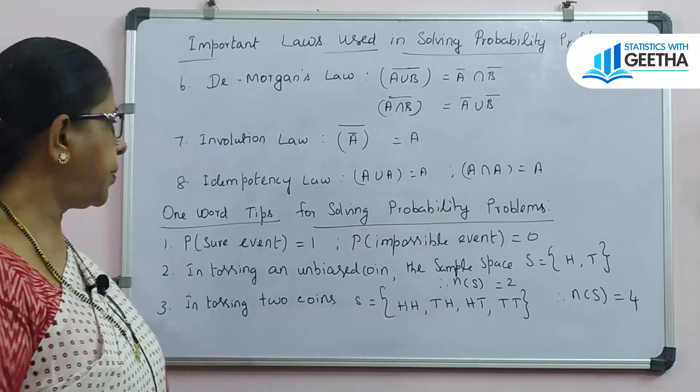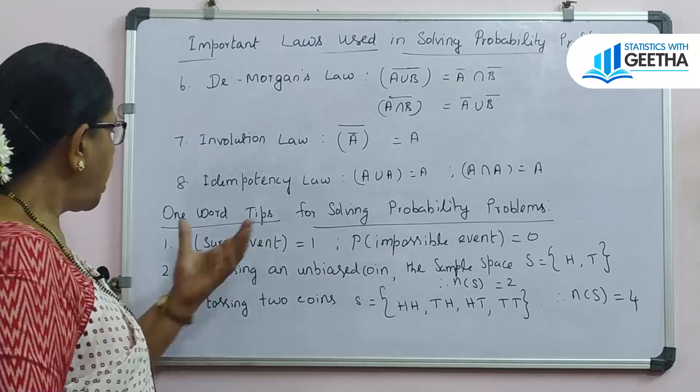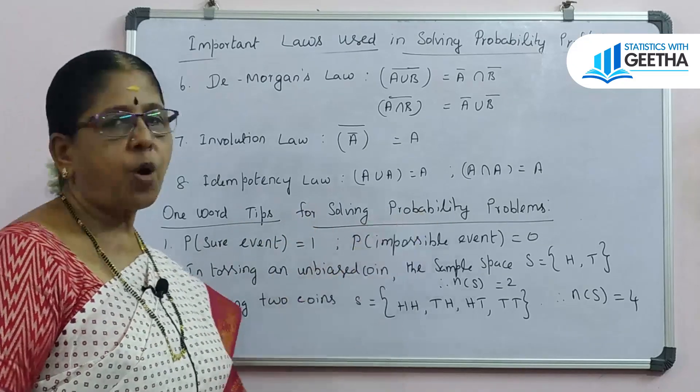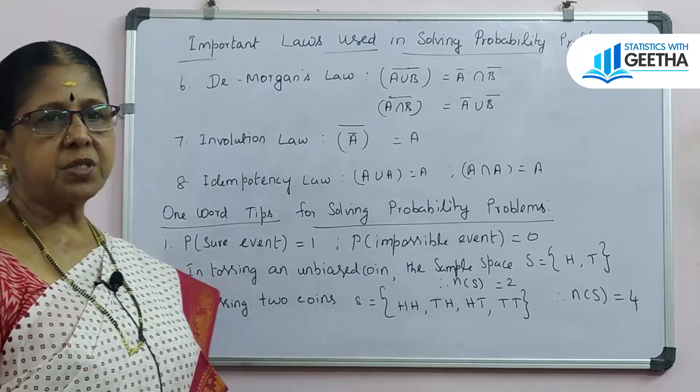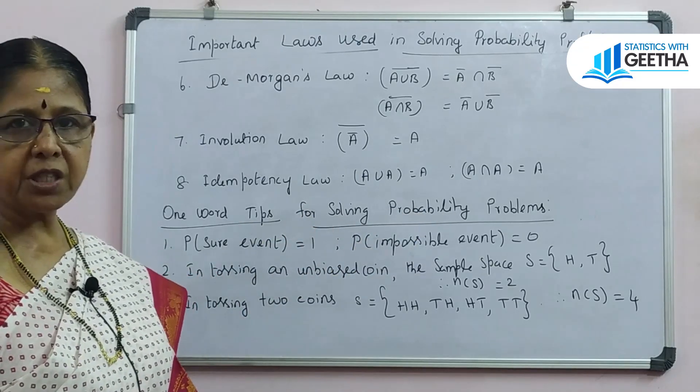Involution law: (A complement) complement equals A. Idempotency law: A union A equals A; A intersection A equals A. So these are all the important laws and tips for solving probability problems.